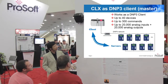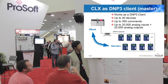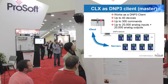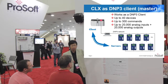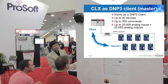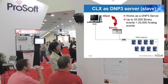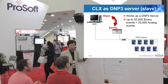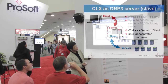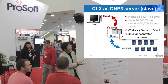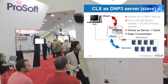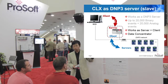Here we have a typical DNP3 network. There's a bunch of intelligent electrical devices — it could be relays, it could be power meters, that sort of thing. We have a client module that acts essentially as a master to poll all of these devices. The special thing about this module is that it's not only a client, it can also act as a server. So if you've got a higher-level system like a DCS, that can act as a client to the ProSoft module, which acts as a server, which in turn acts as a client to all the devices. Essentially, the ProSoft module works as a data concentrator — instead of having your main DCS poll all these devices individually, you just need to talk to one.